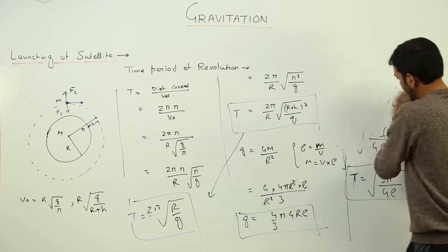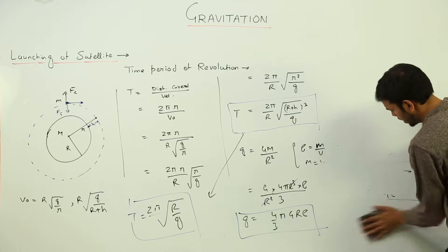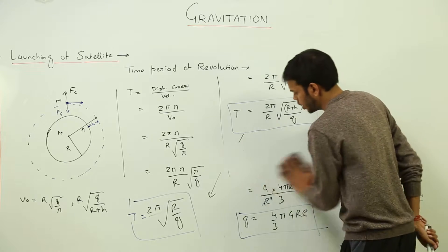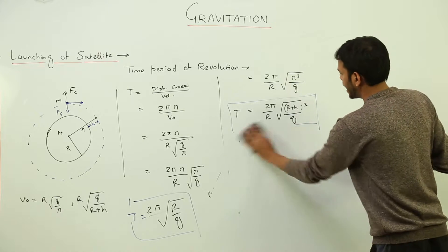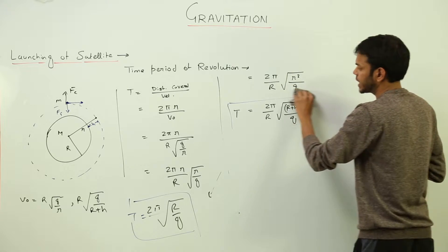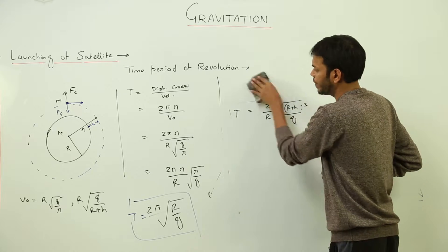Right now we don't need the rest of the thing. Just do one thing in your notebook wherever you are making the notes. Use this equation and do squaring both sides. That is it. That's all you have to do and we'll get the answer.